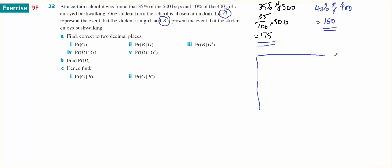We'll use a Venn diagram to represent this information because I've got boys and girls. So this is going to be girls and there's going to be 400 of them. And this is going to be boys, which is not girls, and there's going to be 500 of them. The other event I have is bushwalking, so we're going to have a circle which has bushwalking.